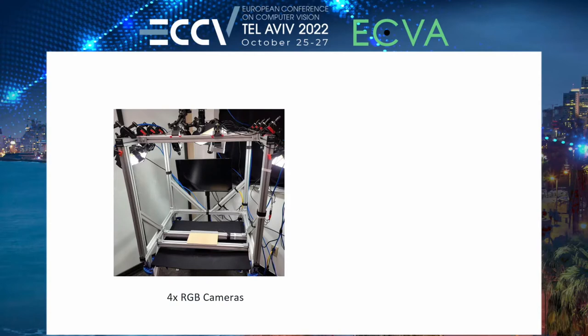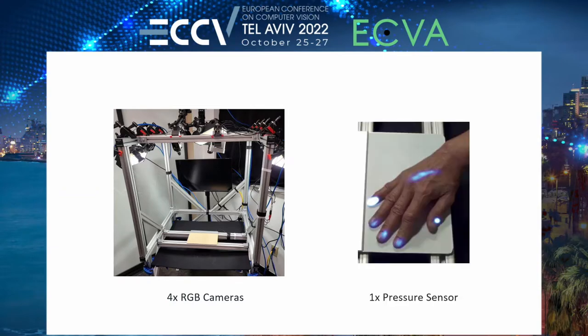Our approach uses a single RGB image as input and then uses a neural network to estimate the location and magnitude of pressure. In order to train a network for this new task, we first have to collect a dataset. We build a capture setup with RGB cameras and use a high resolution pressure sensor to generate contact data. The data from this pressure sensor is projected into the image plane using a homography transform, which you can see here.